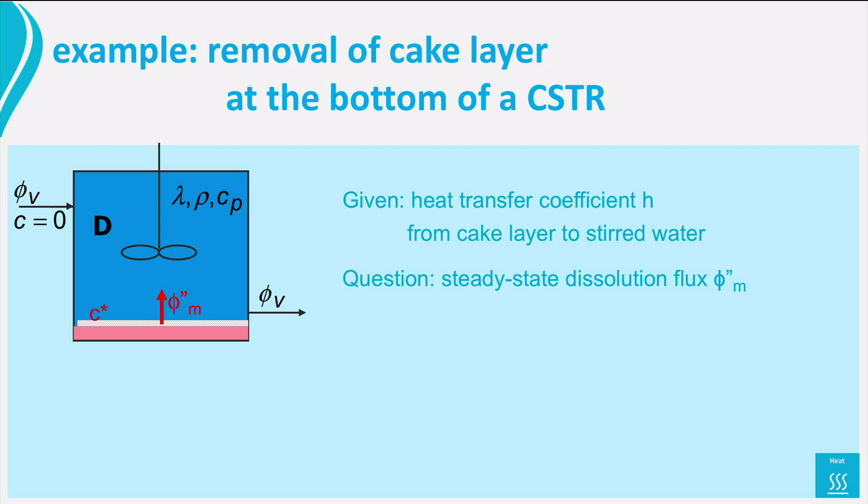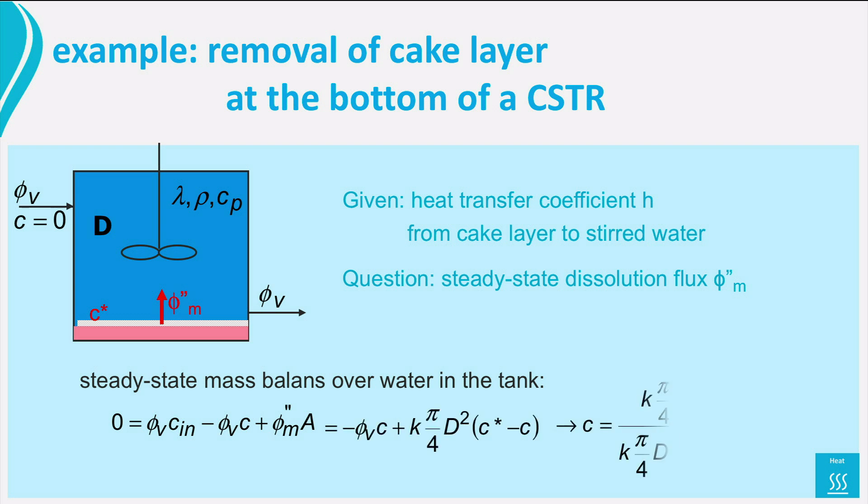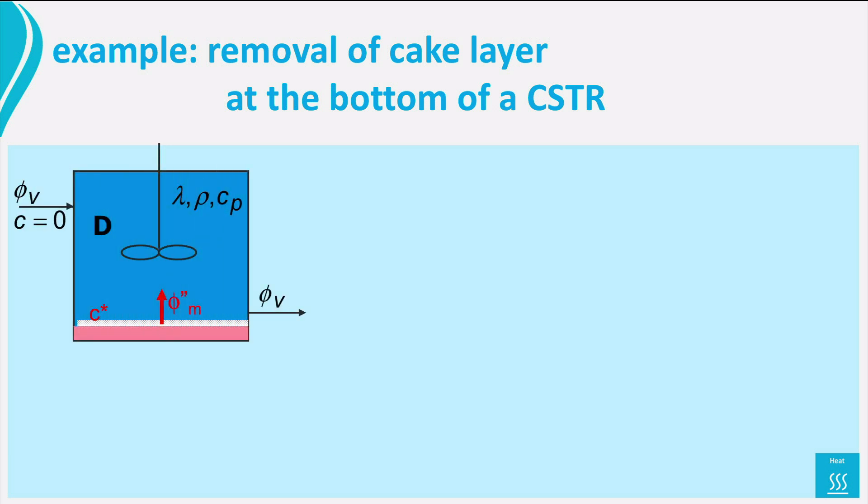If we do this at the same flow conditions, that is at the same geometry, and the same Reynolds number, we can easily find K, the mass transfer coefficient, from H. Ok, to proceed we need the steady state concentration of the cake material in the liquid. For that we set up a mass balance over the water in the tank and back out the concentration in the water.